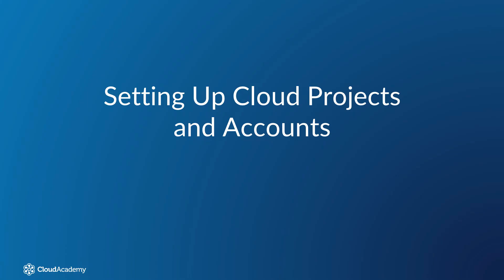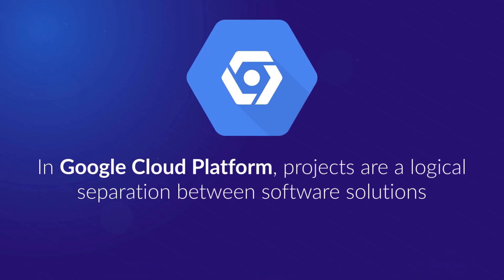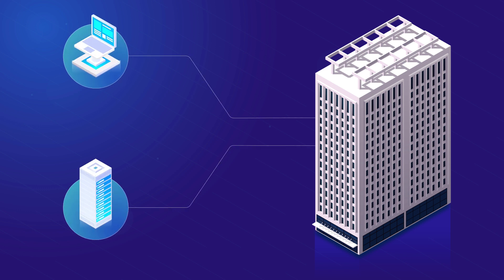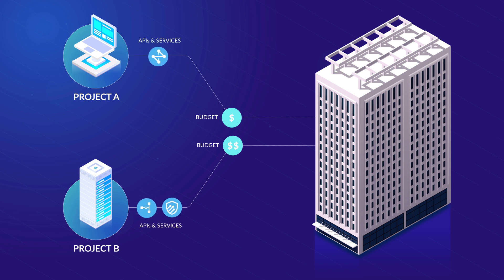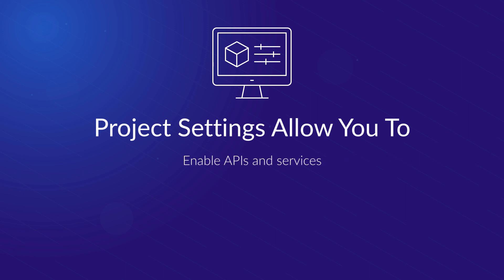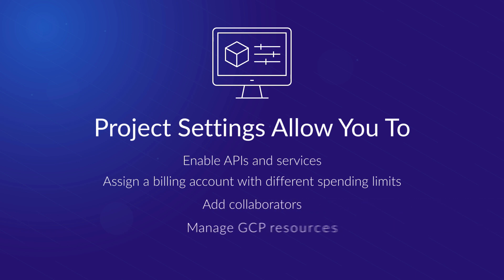For the first section of this course, we will set up a cloud project and its associated accounts. In Google Cloud Platform, projects are a logical separation between software solutions. Imagine an organization that operates two separate online products — these would be broken into two separate projects, each running on separate budgets, potentially leveraging different GCP APIs and services, with different employees assigned to work on them. Project settings allow you to enable APIs and services, assign a billing account with different spending limits, add collaborators, and manage GCP resources.